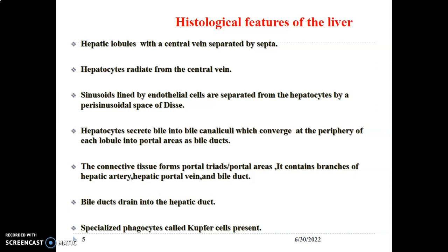Hepatocytes secrete bile, and this bile is transported in the bile canaliculi. The canaliculi converge at the periphery of each lobule into portal areas as bile ducts. The bile ducts of one lobe form the right hepatic duct and the other forms the left hepatic duct. The connective tissue within the periphery of these hexagonal hepatic lobules contains the portal triad, made up of the hepatic artery, a branch of the hepatic portal vein, and the bile duct.